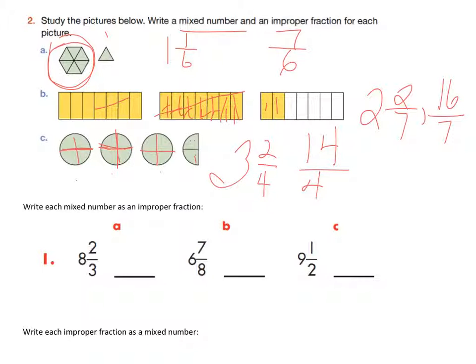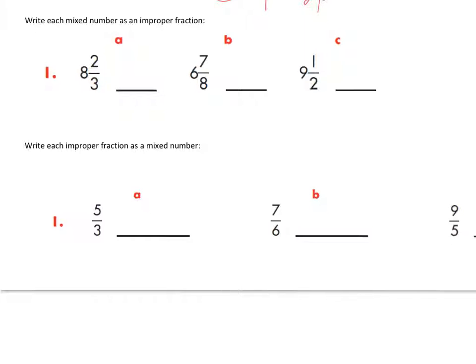Alright, check with your partners to see if you've done it correctly. Alright, let's do some practice with converting. You're going to take each mixed number and make it into an improper fraction. Go ahead and do that on your paper now for all three. Press pause and do that now.